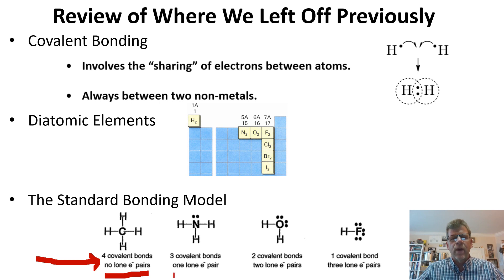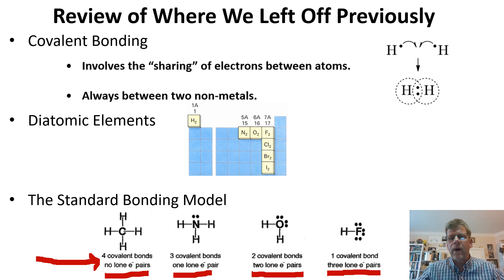Nitrogen has three covalent bonds and one lone electron pair. Oxygen always has two covalent bonds emanating from it with two lone electron pairs. And finally, fluorine — really any halogen — always has one covalent bond emanating from it and three lone electron pairs.